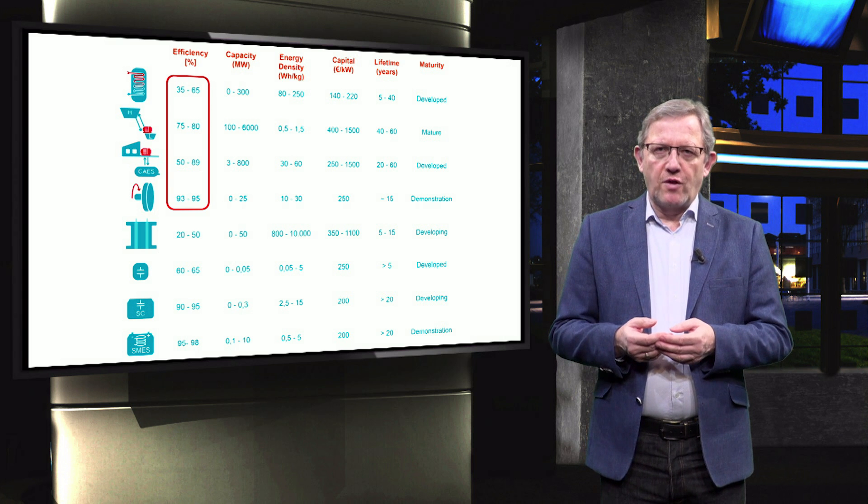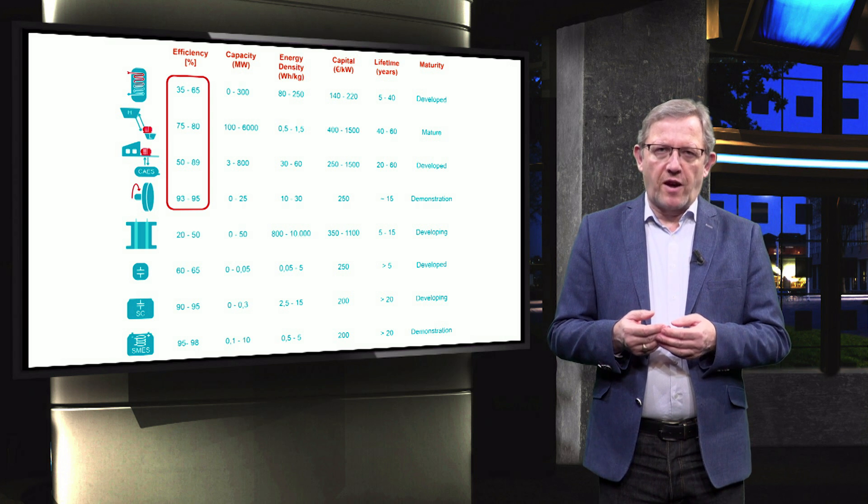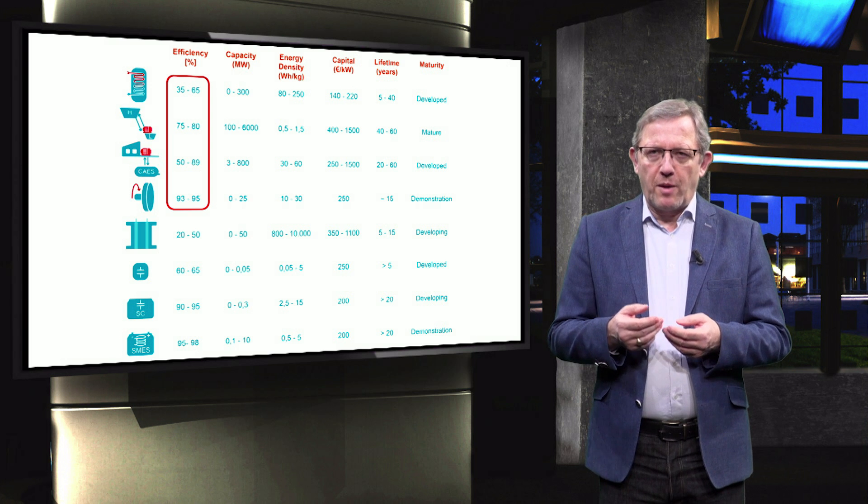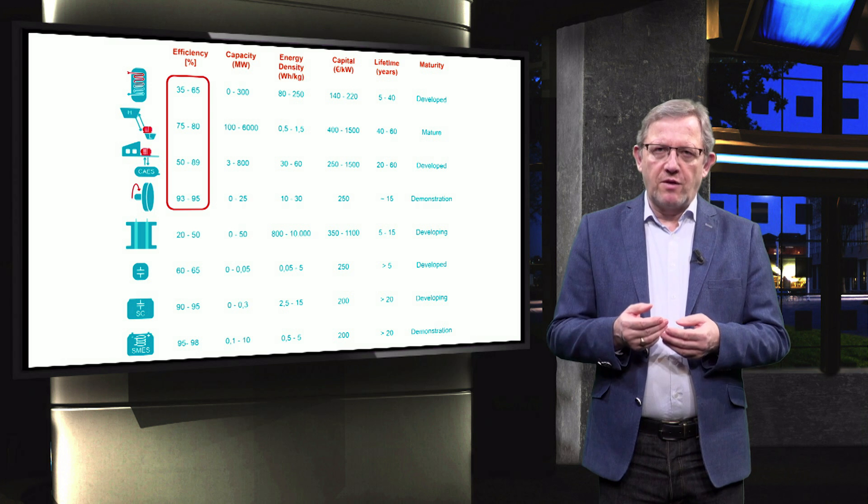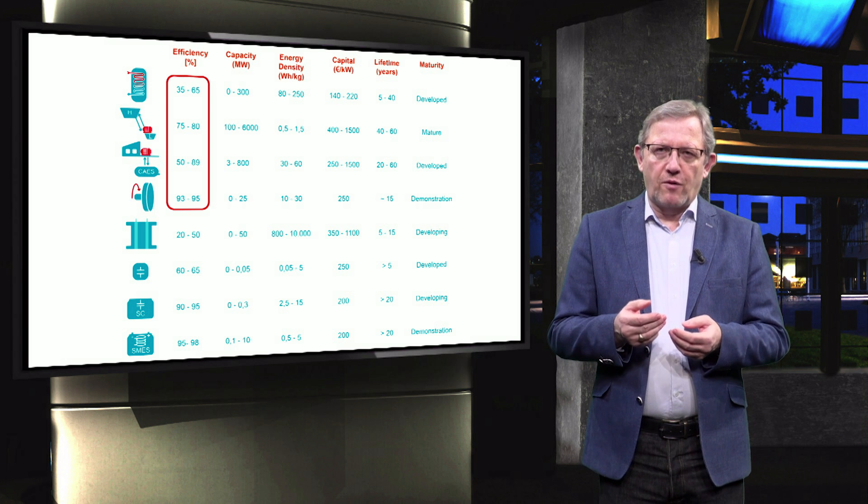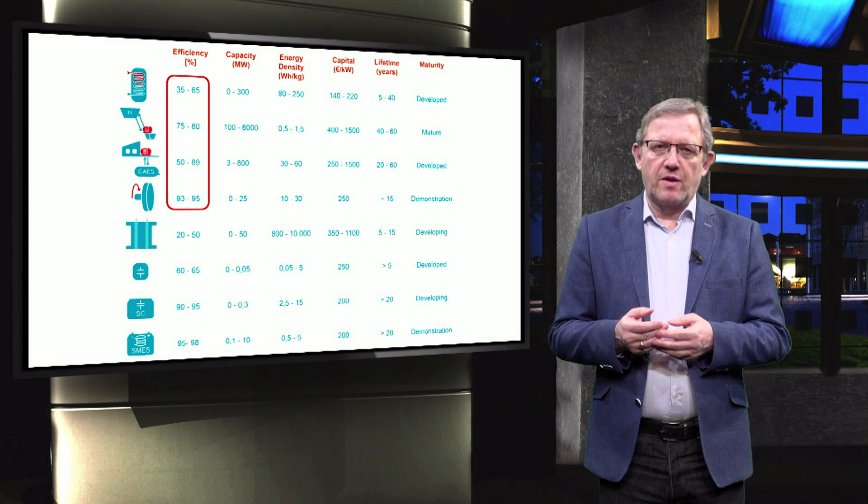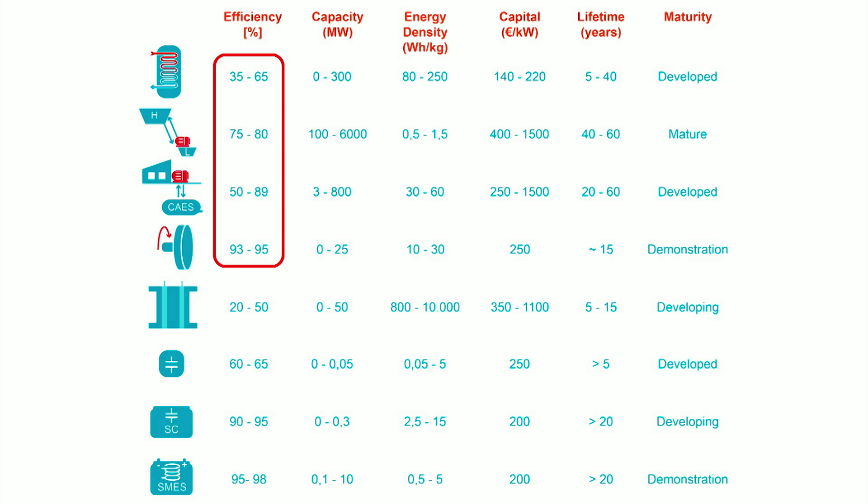Thermal storage has the electrical efficiency from 35 to 65 percent while pumped hydro storage and compressed air energy storage are from 75 to 80 percent and from 50 to 89 percent respectively. The electrical efficiency of a flywheel is relatively high, between 93 and 95 percent.